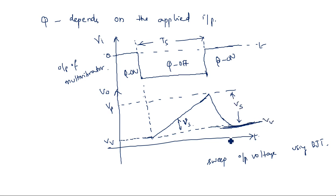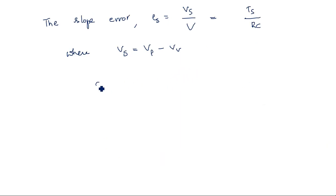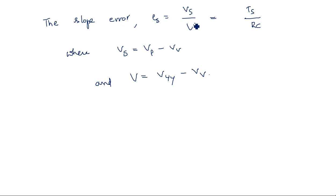From the figure, Vv is the lower value, Vp is the complete maximum value, and Vs equals Vp minus Vv. V in the denominator of the slope error is equal to VYY minus Vv, where VYY is the maximum biasing voltage — the maximum voltage for the capacitor to charge — and Vv is the valley voltage. This is all done within 0 to Ts.